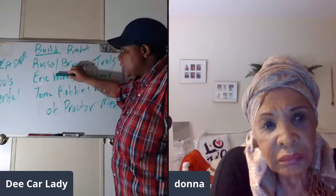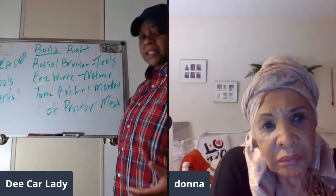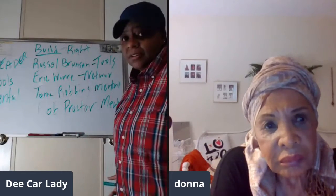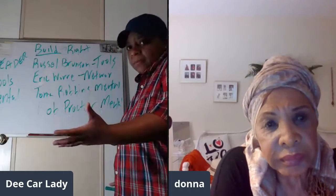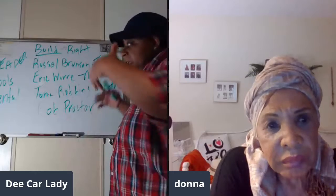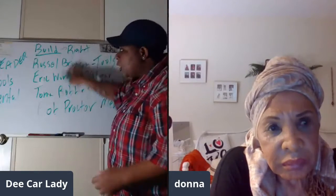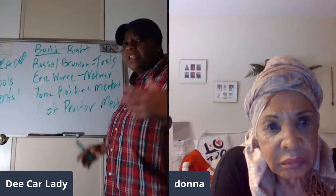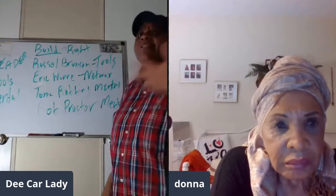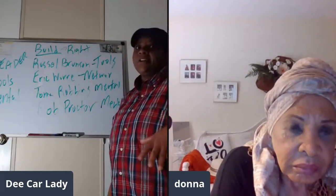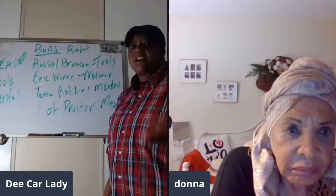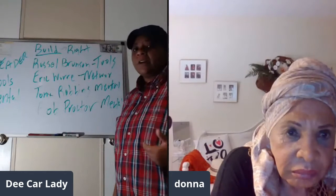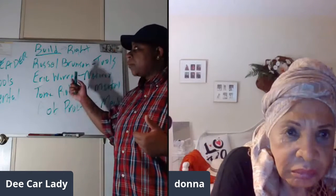These are some of the categories I've identified — there are others, but these are starting points. So you go to those business pages on Facebook, start looking at who's commenting, who's liking, who's hearting — you can see all of that right there on Facebook. Then you look at their profile and ask: what are we looking for in that profile before we send a friend request? Because not everybody commenting is someone you want to add.